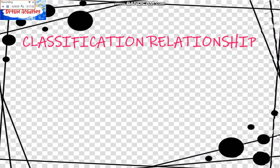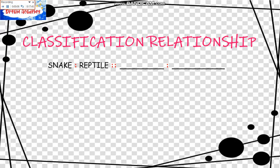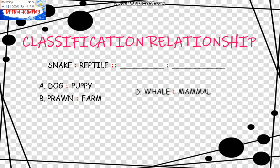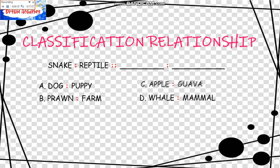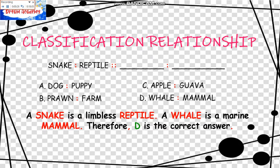The next relationship is the Classification Relationship. Snake is to Reptile as blank is to blank. The choices are: A, Dog is to Poppy; B, Prawn is to Farm; C, Whale is to Mama; D, Apple is to Guava. Snake is a limbless reptile and Whale is a marine mammal. Therefore, D is the correct answer: Snake is to Reptile as Whale is to Mammal.